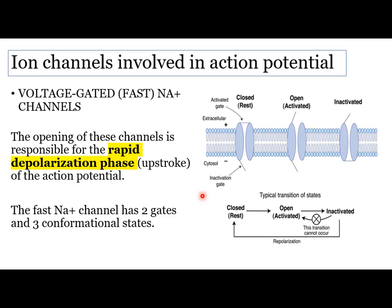We should know the ion channels involved in action potential, starting with the voltage-gated or fast sodium channel. Fast sodium channels are responsible for the depolarization phase, or the upstroke of the action potential. The fast sodium channel has two gates and three states: an outer gate called the M gate and an inner gate called the H gate. The M gate is called the activation gate and the H gate is called the inactivation gate.